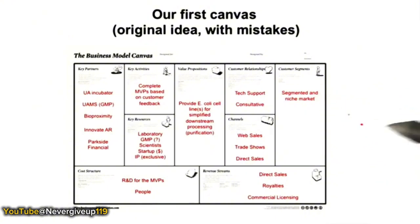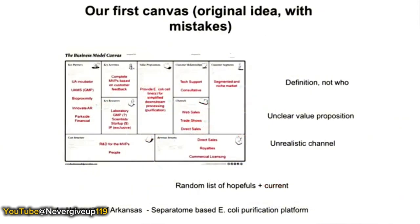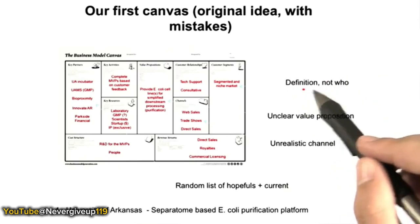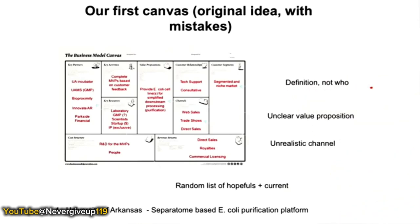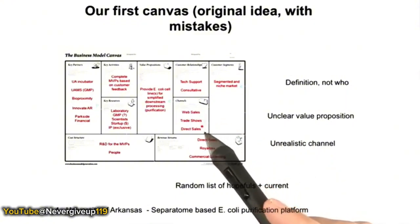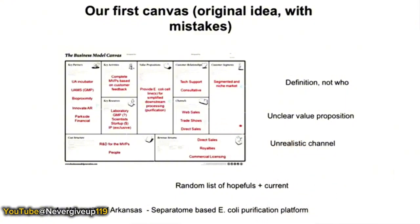They said their customer segment was 'segmented in niche marketing.' In hindsight, after the end of the class, they realized that was just a definition of what a customer segment was — they didn't really describe who. Their value proposition was pretty unclear. And their channels — web sales, trade shows, direct sales — in hindsight looked pretty unrealistic.